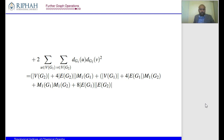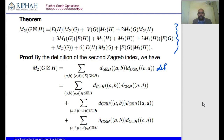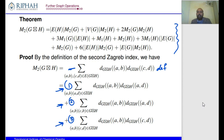After applying all summations, we obtain a simplified formula for the first Zagreb index of the strong product. Next, we have the formula for the second Zagreb index M2(G ⊠ H). The approach is the same: apply the definition of M2, then divide the summation because there are three types of edges in the strong product — three summations. Apply the degree formula to each, perform the computation, and get the final formula.